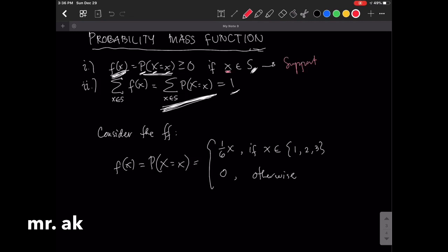So here, our support is—this is our support—and our support includes 1, 2, and 3, meaning to say that x can only take values 1, 2, and 3, nothing more, nothing less.